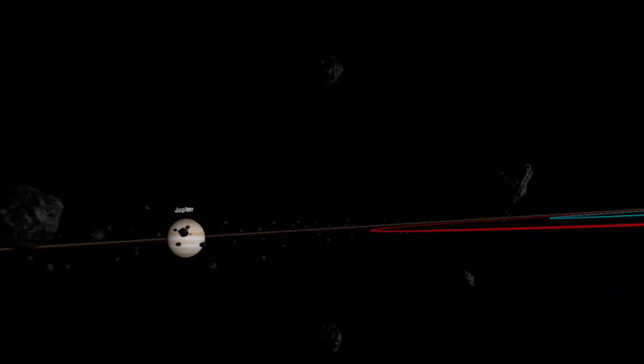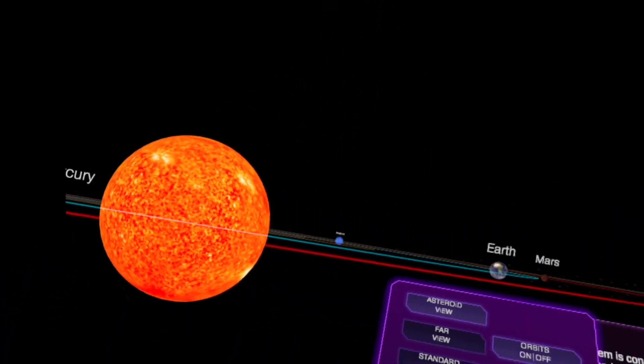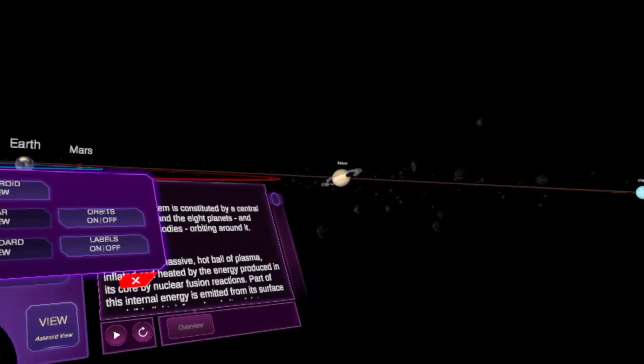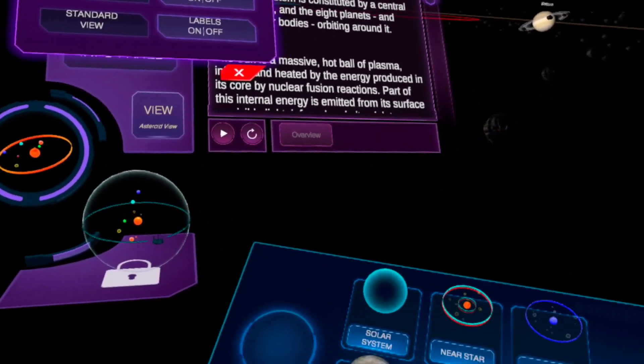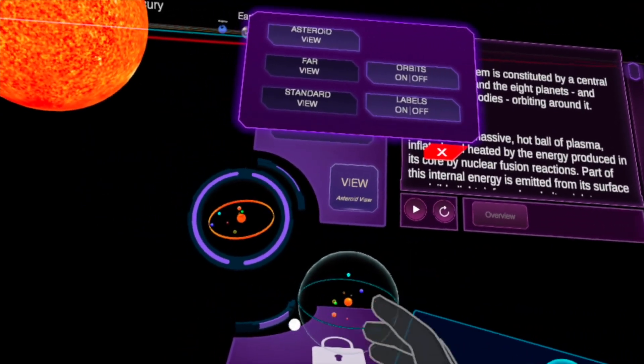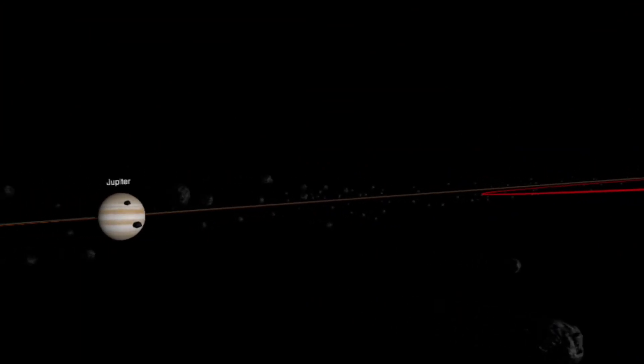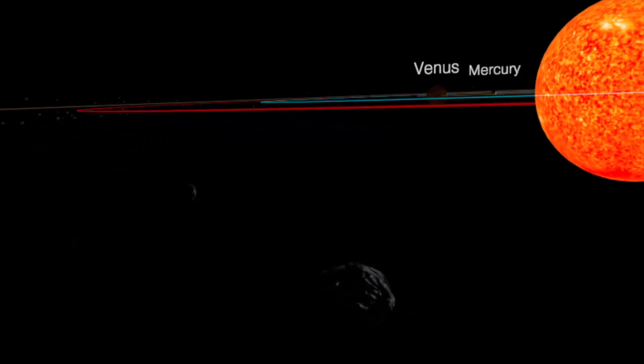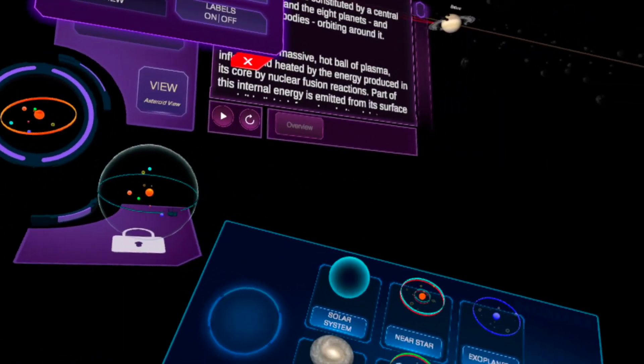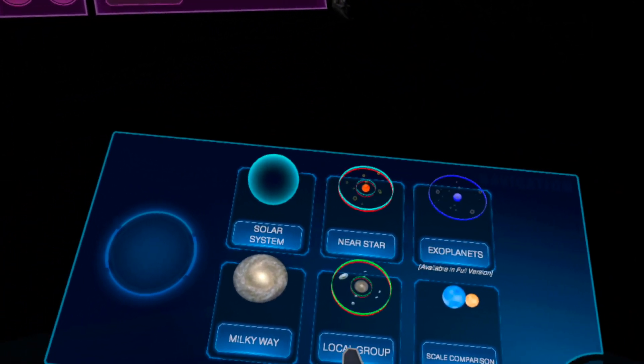It's Newton's laws. The farther a planet is away from the Sun, the slower it revolves. It's gravity. So labels on, labels off, orbits on, orbits off, far view, this is from a distance. Asteroid view, oh this is new. So I can see the asteroid belt. Wow, oh, I can touch the asteroid belt. Wow, this is a great update.